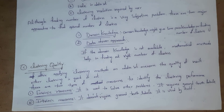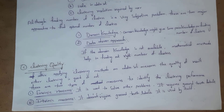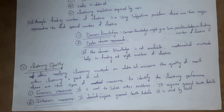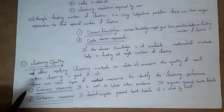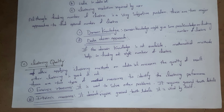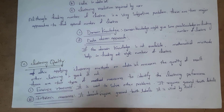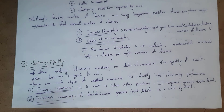The last factor is clustering quality. After applying clustering methods on the dataset, we measure the quality of the result — that is, we check whether the clustering is good or not. There are two types of measures used to identify clustering performance: extrinsic measure and intrinsic measure. Extrinsic measure is used to solve other problems and requires truth labels, whereas intrinsic measure is used by itself and does not require any truth labels.